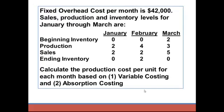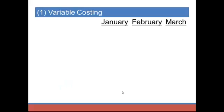Fixed overhead cost per month is $42,000. Sales, production, and inventory levels for January through March are as follows: January began with zero cars, produced two, sold two, ending with zero. February started with zero, produced four, sold two, ending with two. March began with two cars, produced three more, sold five, and ended with zero. We're going to calculate the production cost per unit for each month under variable costing and then absorption costing.